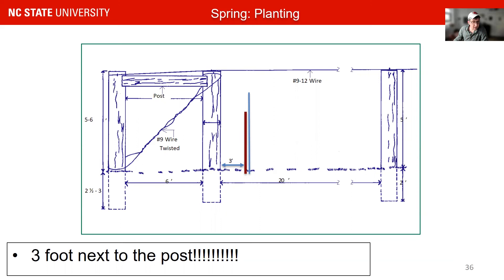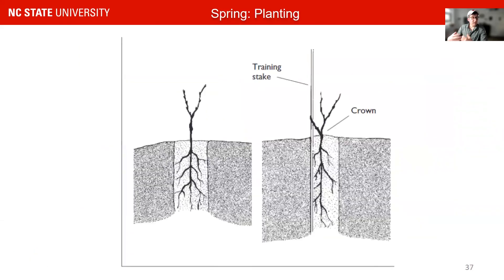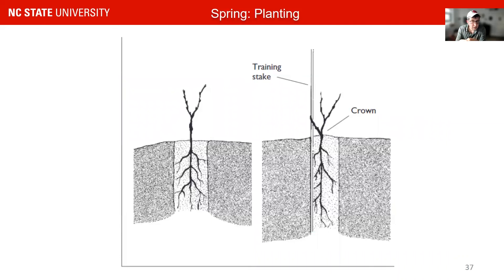Your muscadine vine should be planted about three feet from the post — this will allow you to train one of your arms above the post later. When planting, make sure the hole is big enough for the root system to fit without bending. Plant the entire root system below the surface, with some part of the trunk above the first or second node. You will need a training stake, usually a bamboo stake, to train your plant up to the wire.